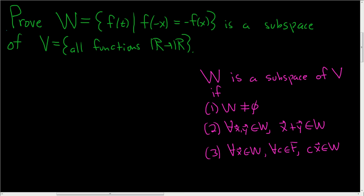In this video, we have a set W — the set of all functions such that f of negative x is equal to negative f of x. So this is the set of all odd functions. We're asked to prove that this is actually a subspace of all functions from the real numbers into the real numbers. This vector space is over the real numbers, and we have three conditions we need to carefully satisfy.